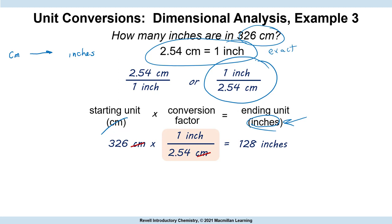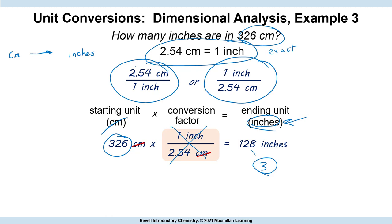Now let's talk sig figs. You don't have to worry about this conversion factor in terms of sig figs because it's an exact conversion — there's exactly 2.54 centimeters in an inch. We start with 326: all non-zero digits, so all are significant. We carry three digits in our answer.